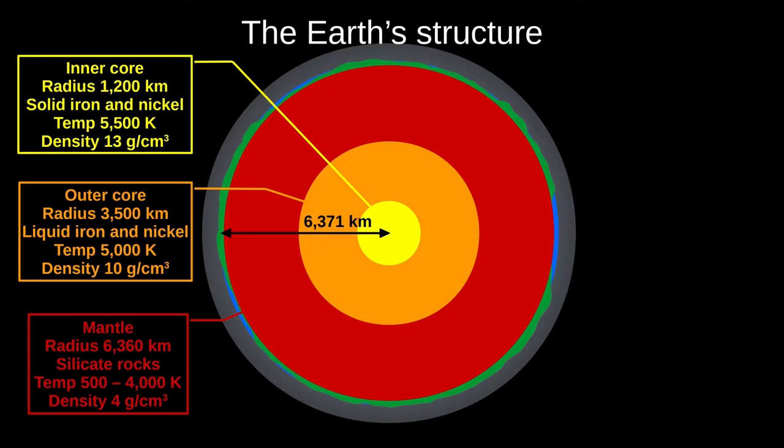Above that is the mantle, which is over 80% of the Earth by volume. This cools as you get further from the core, down to only 500 Kelvin at the top. This is made of mostly silicate rocks. The mantle is solid, but the high pressure is enough that over millions of years, it flows like a very dense liquid.